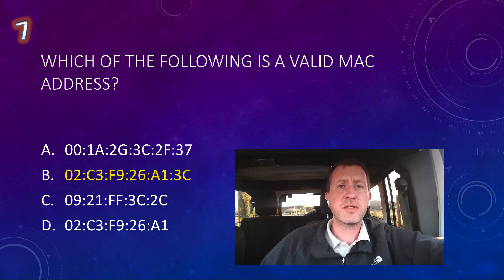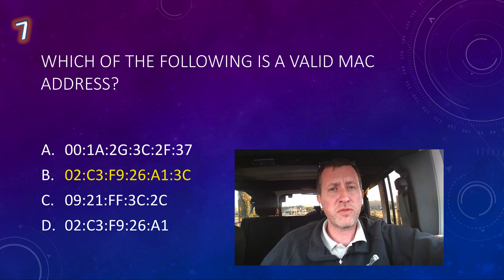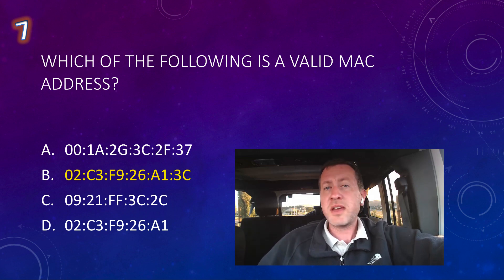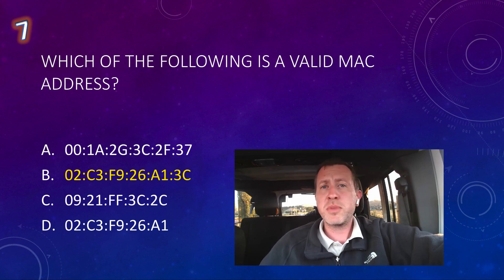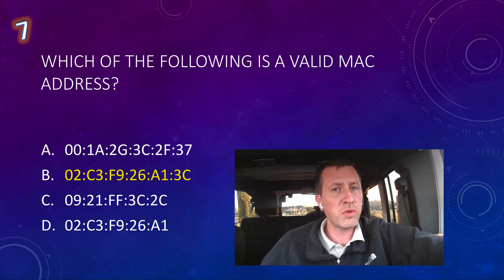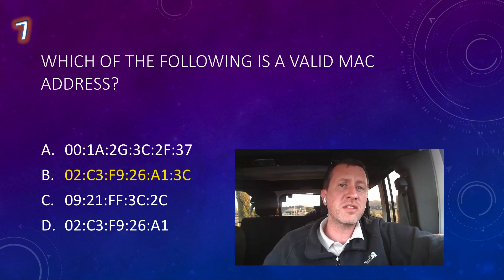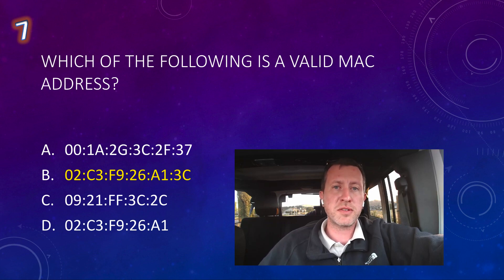Question seven: Which of the following is a valid MAC address? MAC addresses are 48 bits long, divided into six groups — the first half is the OUI (Organizational Unique Identifier) and the last half is the interface ID. They are based in hexadecimal: 0–9 and A–F. We can immediately eliminate option A because it contains a G, which is not valid in hex. Options C and D have only five groups of two characters, not six. So the only valid option is B. Let's move to question number eight.